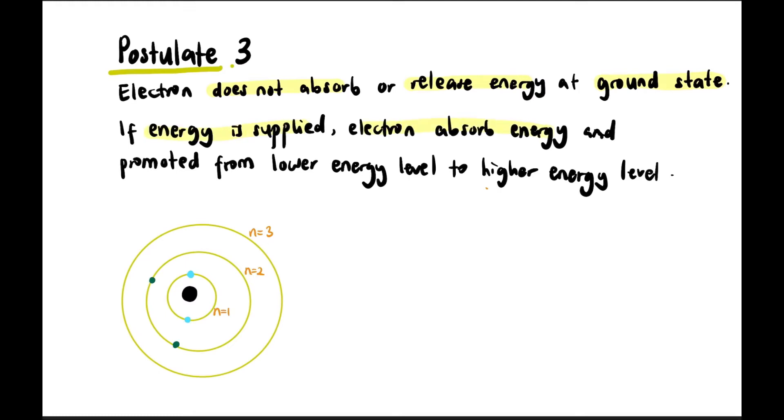When an electron is given energy, it will absorb that energy and be promoted or excited from a lower energy level to a higher energy level. How much it moves up depends on how much energy it absorbs - it might go from n1 to n2, or n2 to n3, or n1 to n3 directly, or n1 to n4, depending on how much energy is absorbed and how far it can be excited.